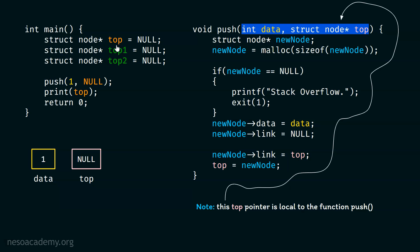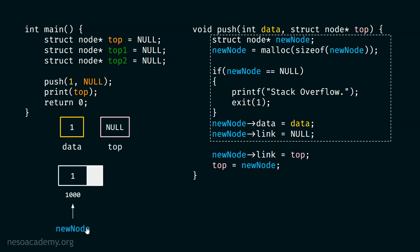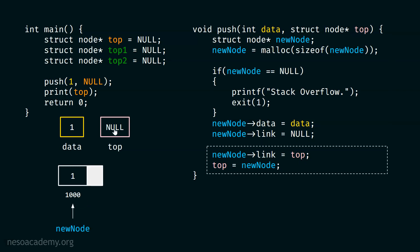With this piece of code, we create a new node. A new node is created and new node pointer is pointing to this node — its address is assumed to be one thousand, link part is null, and data part holds one. After this, we update new node's link by top, which is null. Then we assign new node to top, meaning we put address one thousand into this top pointer, so null gets replaced by one thousand. Everything makes sense up to this point.